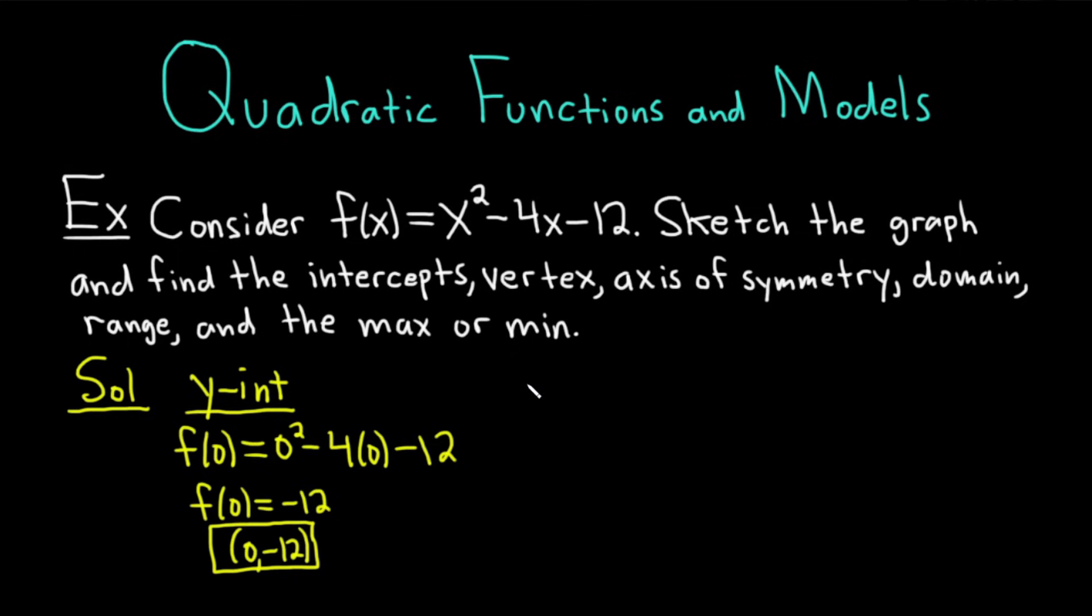Let's go ahead and find the x-intercepts. To find the x-intercepts of any function, all you do is you take your entire function and you set it equal to 0. So we have x² - 4x - 12, and we set that equal to 0.